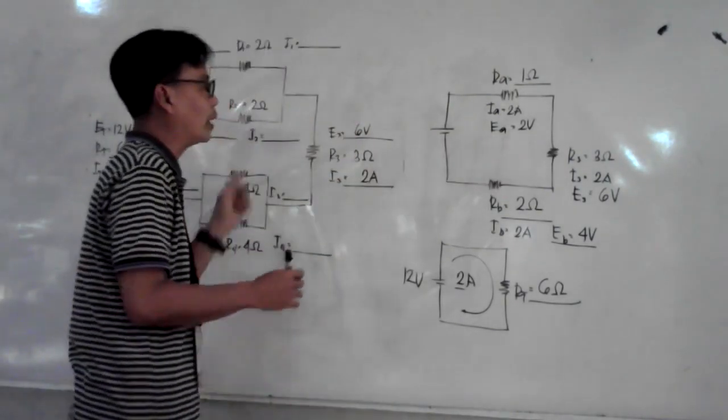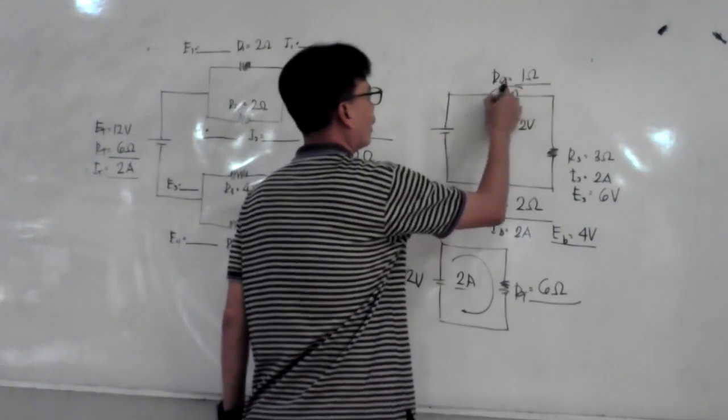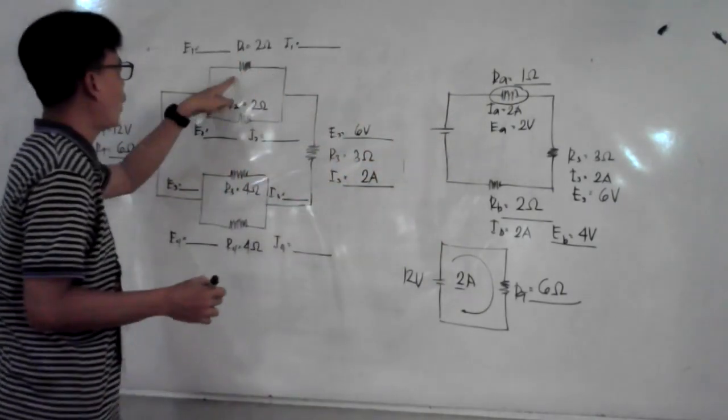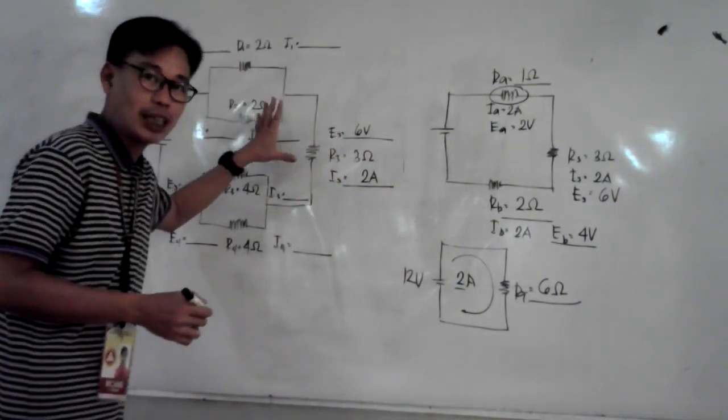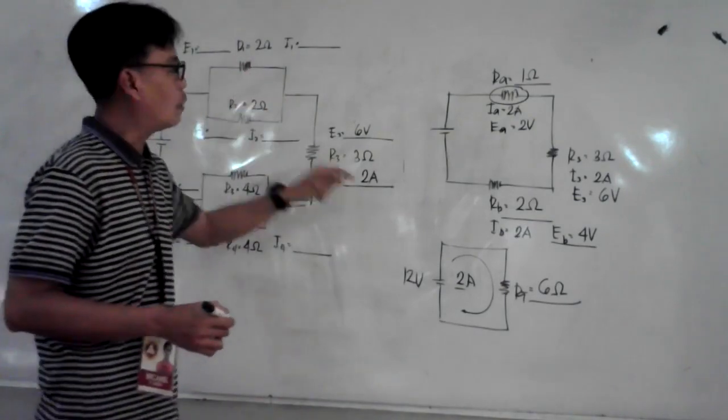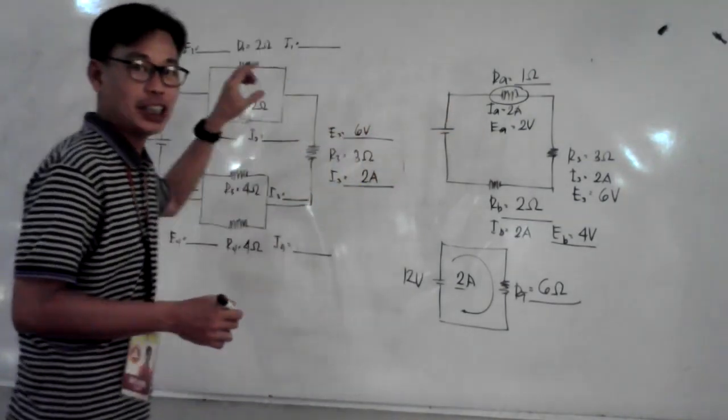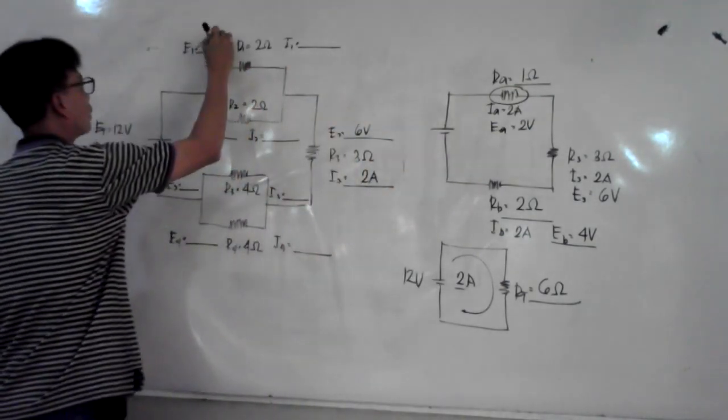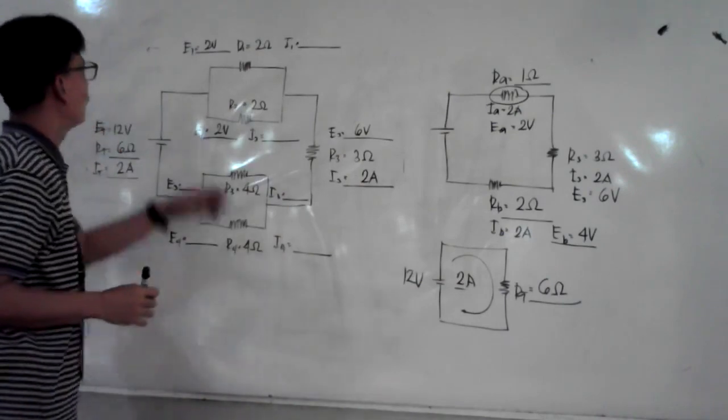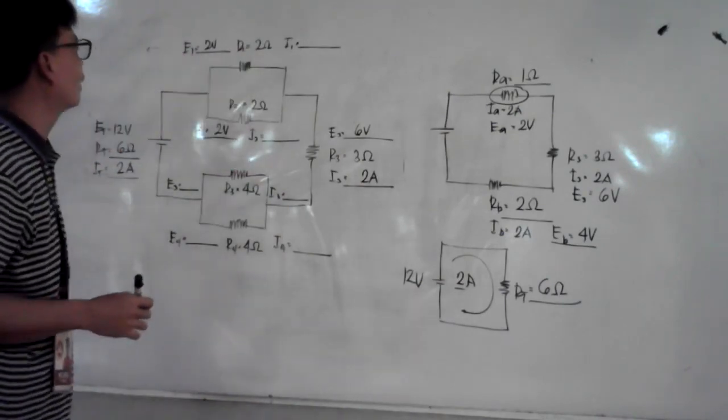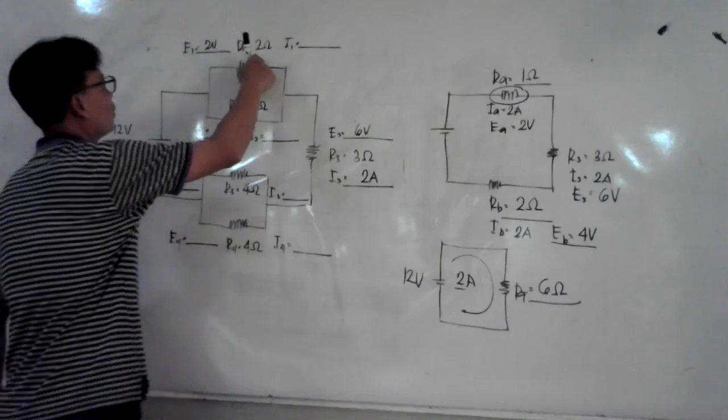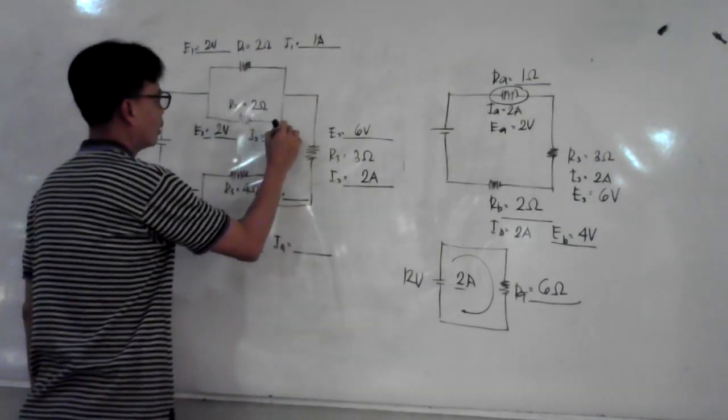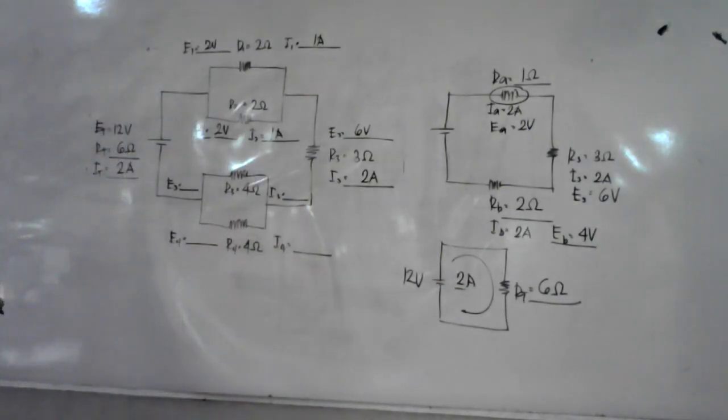From here, we go to the main problem. Ra splits into 2. From Ra it becomes R1 and R2 which are connected in parallel. The constant in parallel is voltage. The voltage of both is 2 volts, so this is 2 volts and this is 2 volts. You have voltage and resistance, so 2 divided by 2 is 1 ampere here, and 2 divided by 2 is 1 ampere here.